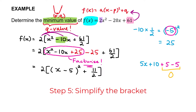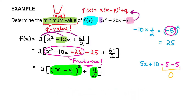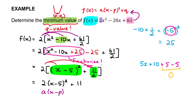Inside the bracket there are two terms, so we distribute the 2 to both of them, giving a final answer of 2(x − 5)² + 11. Lining this up with the form a(x − p)² + q, we see that p = 5 and q = 11. The minimum of this function is that q value, which is 11. So by completing the square, we've been able to find that the minimum of f(x) = 2x² − 20x + 61 is 11.